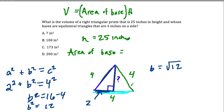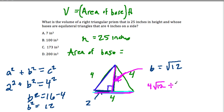So what's the area of this triangle? The area of the triangle is the base of the triangle, 4, times the height of the triangle, which we just established was the square root of 12. So the area of the triangle is 4 times the square root of 12, but then it's cut in half — divided by 2. So it's 2 times the square root of 12. That's the area of the triangular base.